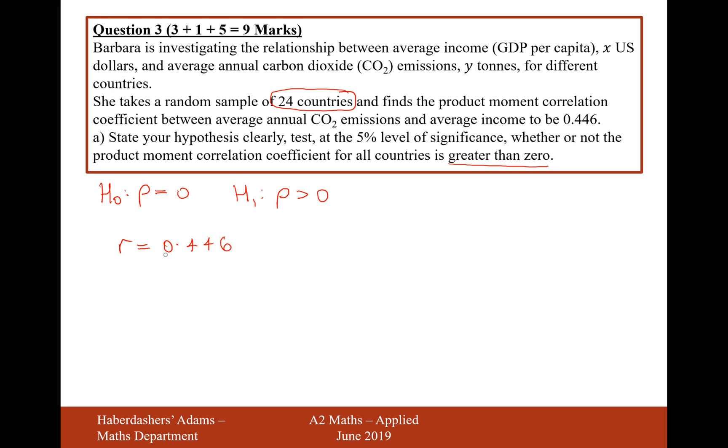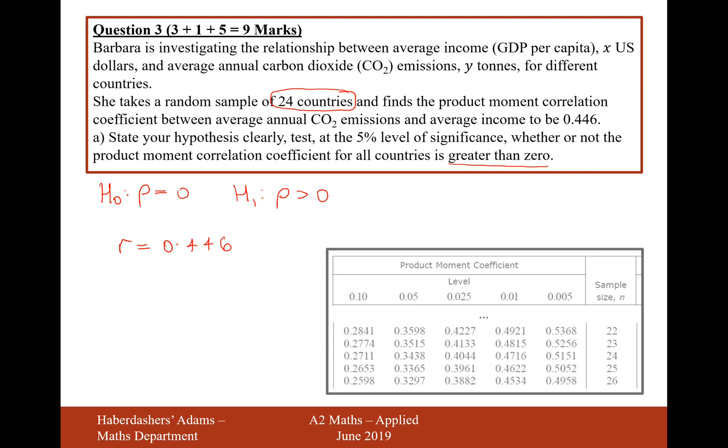So what we need to now do is compare this 0.446 with the formula booklet table. We go to the formula booklet table, and I've taken a snippet here. So on the 5% significance level where we have 24 as our sample size, we go across and down and we get to the benchmark which is 0.3438.